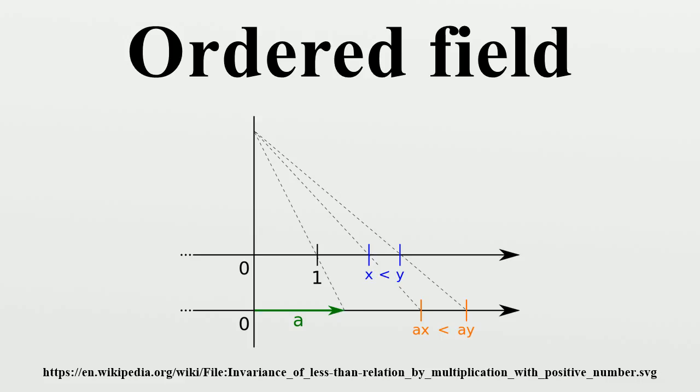Finite fields and more generally fields of finite characteristic cannot be turned into ordered fields, because in characteristic P, the element minus 1 can be written as a sum of squares. The complex numbers also cannot be turned into an ordered field, as minus 1 is a square and would thus be positive.